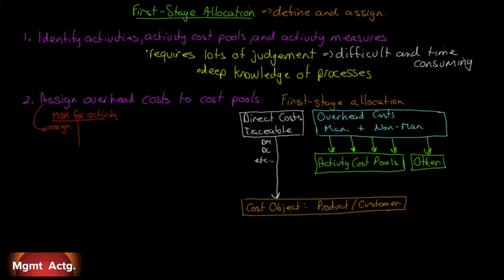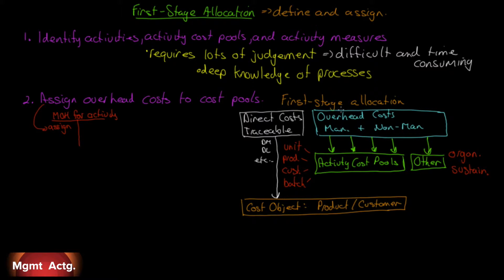Some of the costs that you can trace go to unit cost pools, product cost pools, customer cost pools, batch cost pools — the five levels we've been through. The other category — costs that don't get assigned to anything — we call organization-sustaining activities. For example, the CEO salary: you can't really assign that to anything. You've got to pay it no matter what you make or how much you make. So that's assign, that's define — number one and assign, number two.